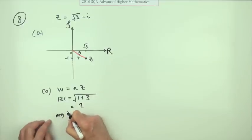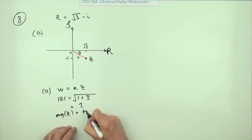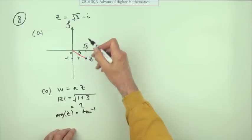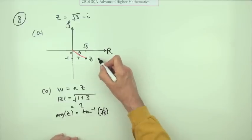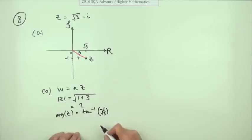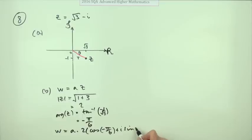And the argument of z is going to be the inverse tan of, and that will be negative one upon root three, which you know from the diagram is in the fourth quadrant. So you know that that, without looking it up, is 30 degrees. So that's negative pi upon six, which means that w is going to be a times this.